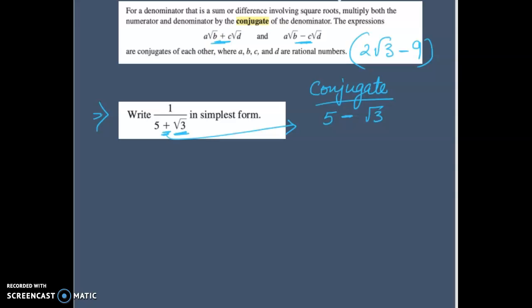What will be the conjugate of this one? We just discussed that we have to just change the sign. Everything will remain the same. So 5 will remain 5, radical 3 will remain radical 3. But instead of addition, it will become subtraction. That is my conjugate. Now let's use this conjugate to get rid of radical from the denominator. But how? I will multiply numerator and denominator with the conjugate.